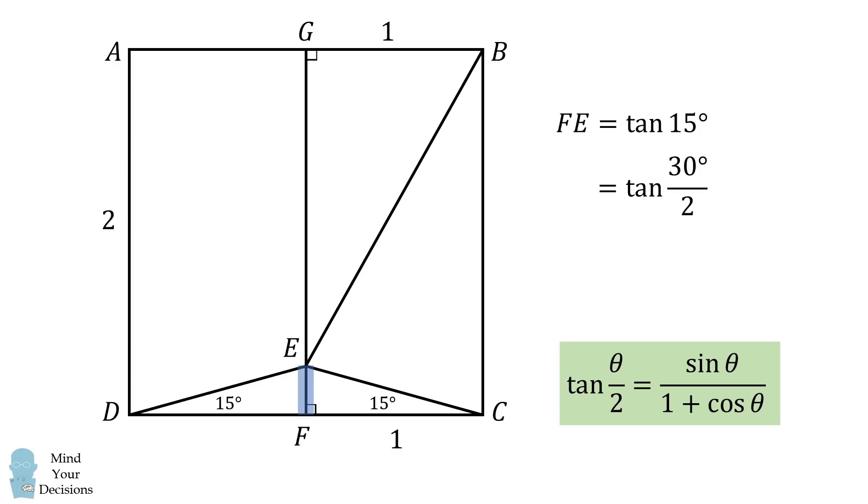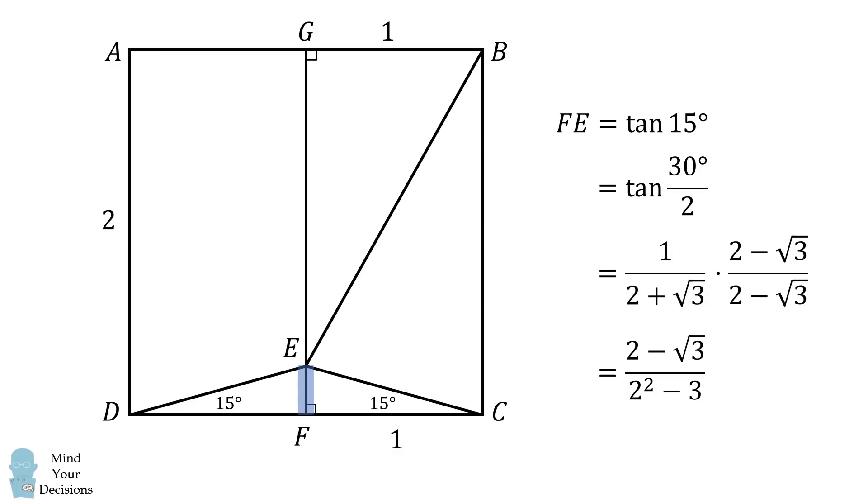We can thus substitute theta is equal to 30 degrees, and it's a routine calculation from here. We merely simplify this fraction, and then we can rationalize it as well. We end up that FE is equal to 2 minus the square root of 3.